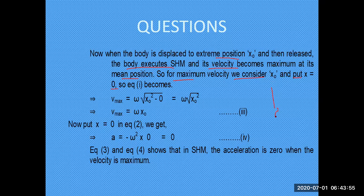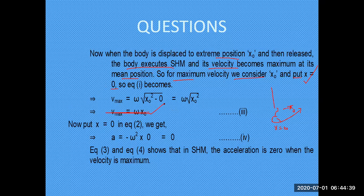If you draw the figure, you see that to either side of the mean position, this is basically x-naught. At the mean position, x is 0 — displacement is 0. X is the displacement to either side of the mean position, and x-naught is the amplitude. So at the mean position, displacement is 0. Put the value of x equal to 0, and this equation gives the maximum velocity, which is omega times x-naught.